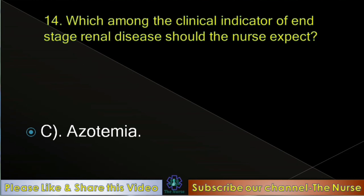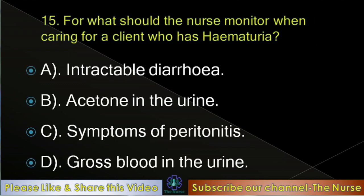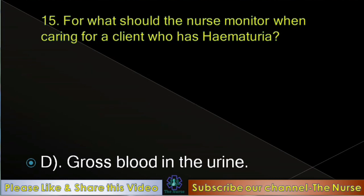Next question: For what should the nurse monitor when caring for a client who has hematuria? Options: Intractable diarrhea, acetone in the urine, symptoms of peritonitis, gross blood in the urine. Correct answer: Gross blood in the urine.